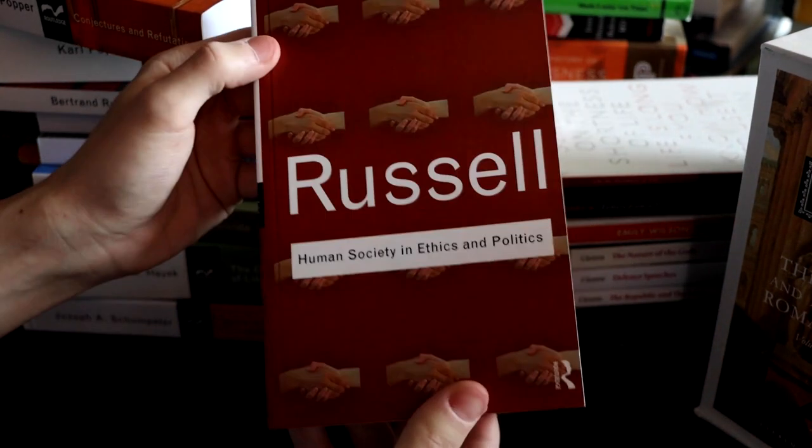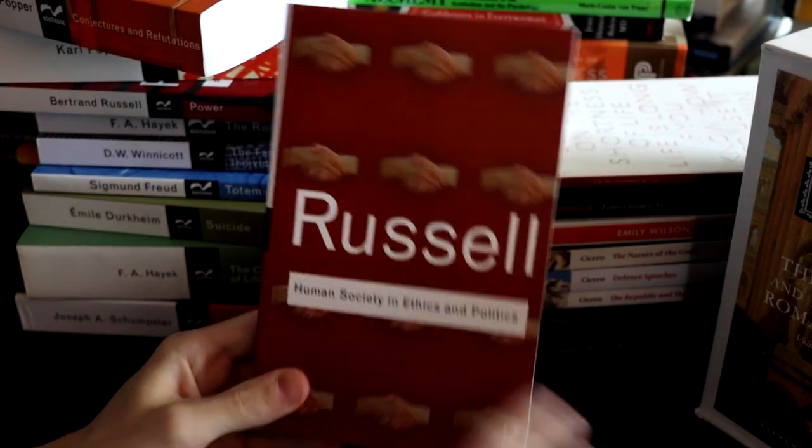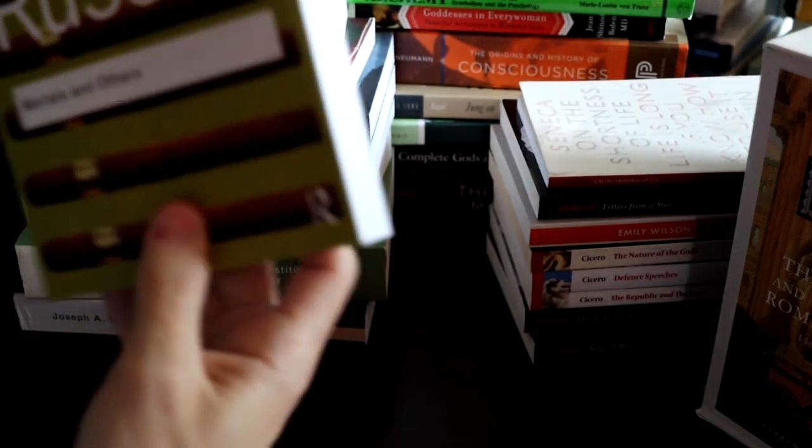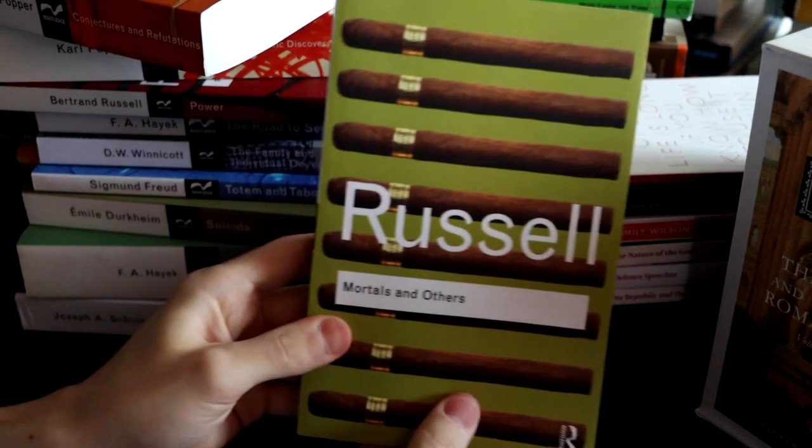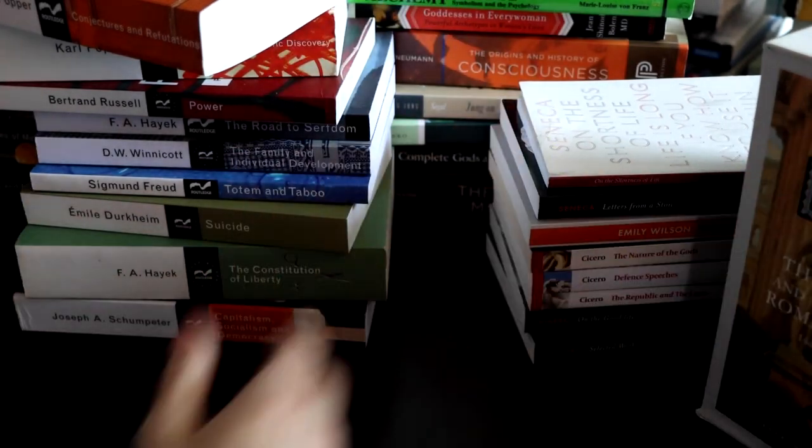This one's Bertrand Russell's Human Society, Ethics and Politics. I don't know what it's about. Mortals and Others. I don't know what it's about. Again, this is just a book I bought because it's a Routledge classic. I'll read it at some point.